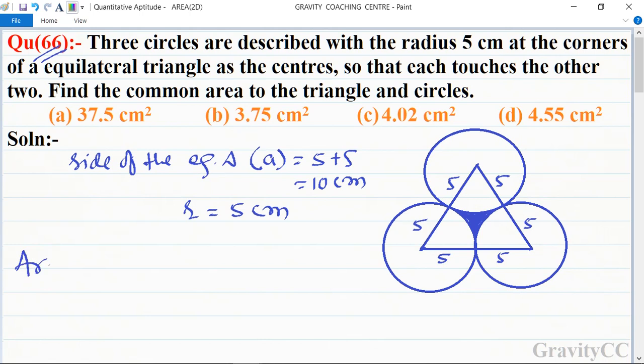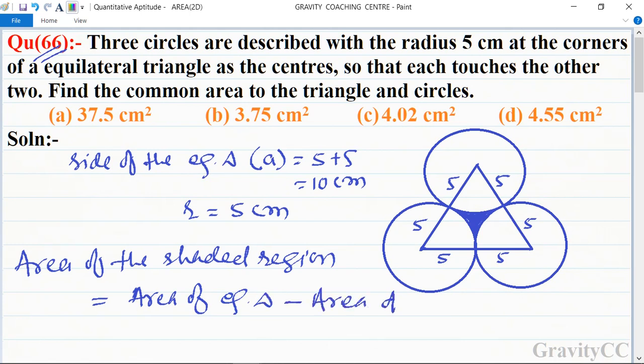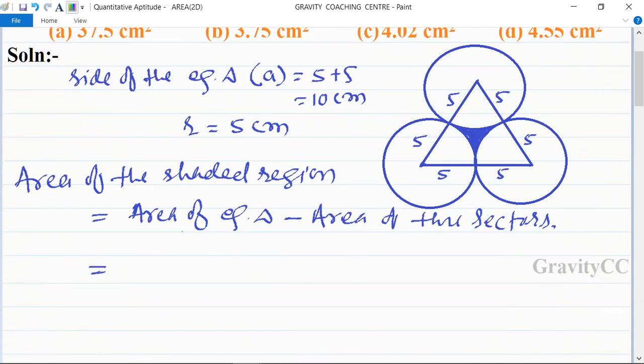Area of the shaded region is area of equilateral triangle minus area of three sectors. This equals root 3 upon 4 into side square minus 3 into pi r square theta upon 360.